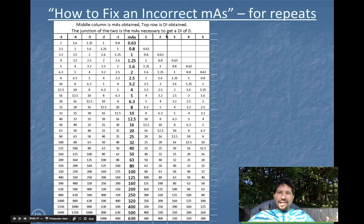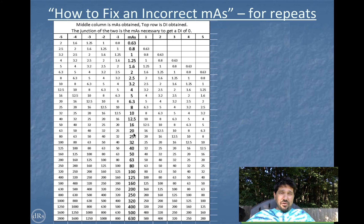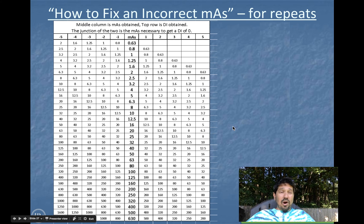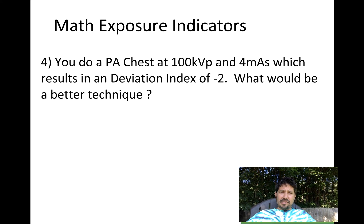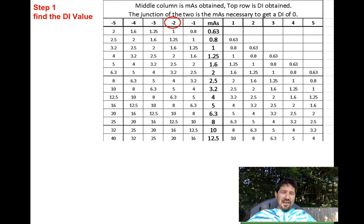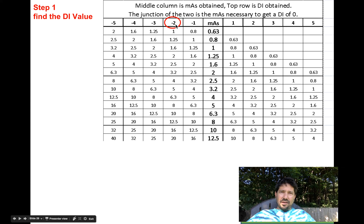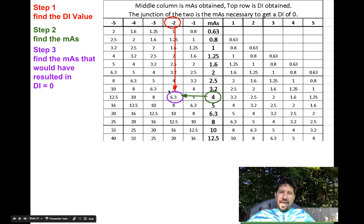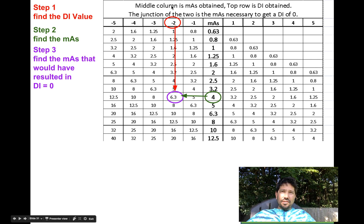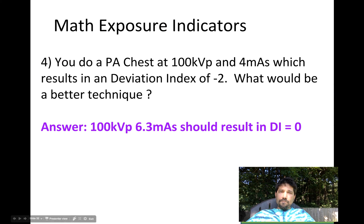Dennis Bowman gave us a fantastic chart, and this can hang up in your room next to your machine where you have DI values. It's an easier way to determine what optimal mAs you should use for your next exposure. We'll use the chart for our next example. You shoot a chest at 100 kVp and 4 mAs, you get a DI of negative 2. It's underexposed. You go to the chart, circle negative 2 as the DI value, circle 4 as the mAs you actually used, and find the intersection: 6.3 mAs is what you should have used to get a DI of 0. The middle column is mAs, the top row is DI, and the intersection gives you the mAs that would have produced a DI of 0.